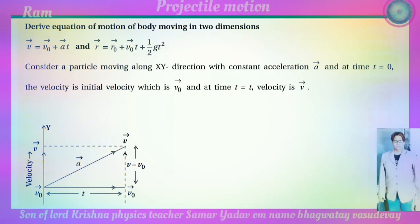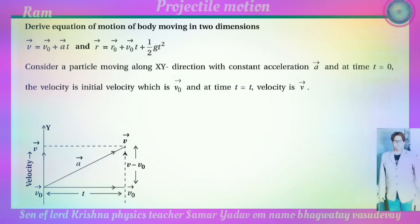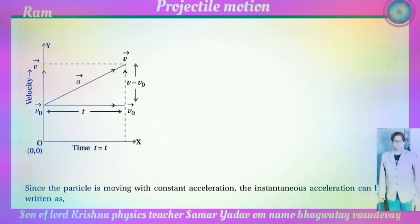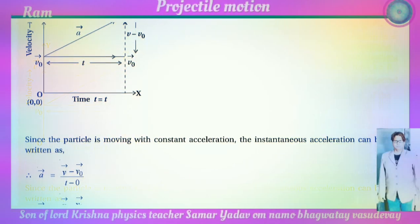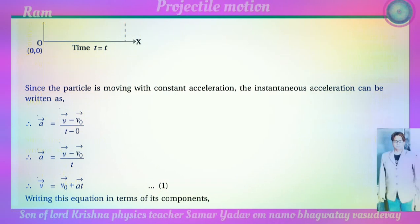The equations of motion of a body moving in two dimensions are: v equals v-zero plus a t, and r equals r-zero plus v-zero t plus one-half a t-squared. Consider a particle moving along the xy direction with constant acceleration a. At t equals zero the velocity is initial velocity v-zero, and at time t the velocity is v, as shown in the velocity-time graph. Since the particle moves with constant acceleration, the instantaneous acceleration is a equals (v minus v-zero) divided by t.